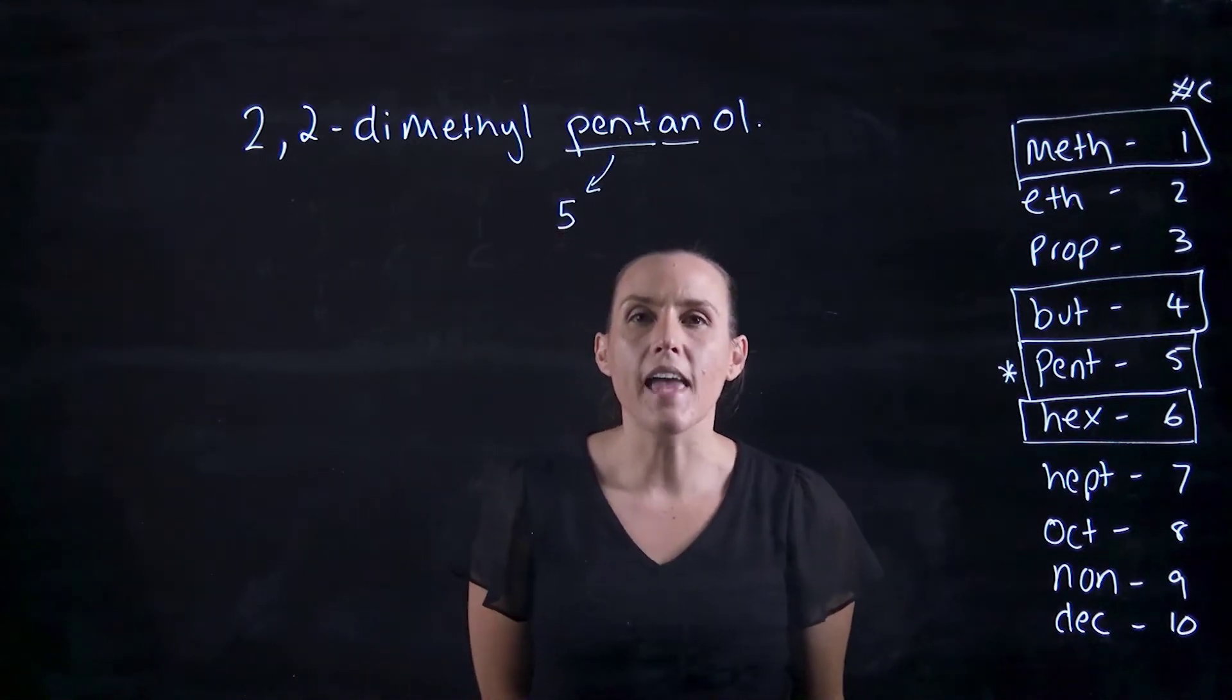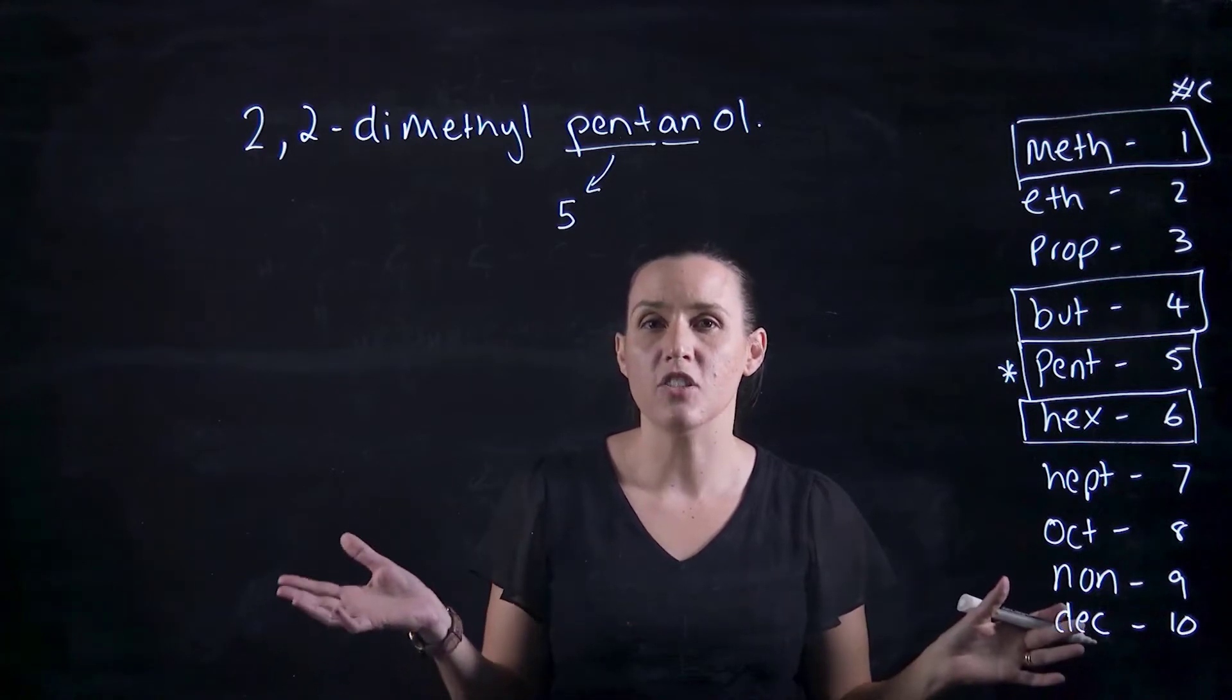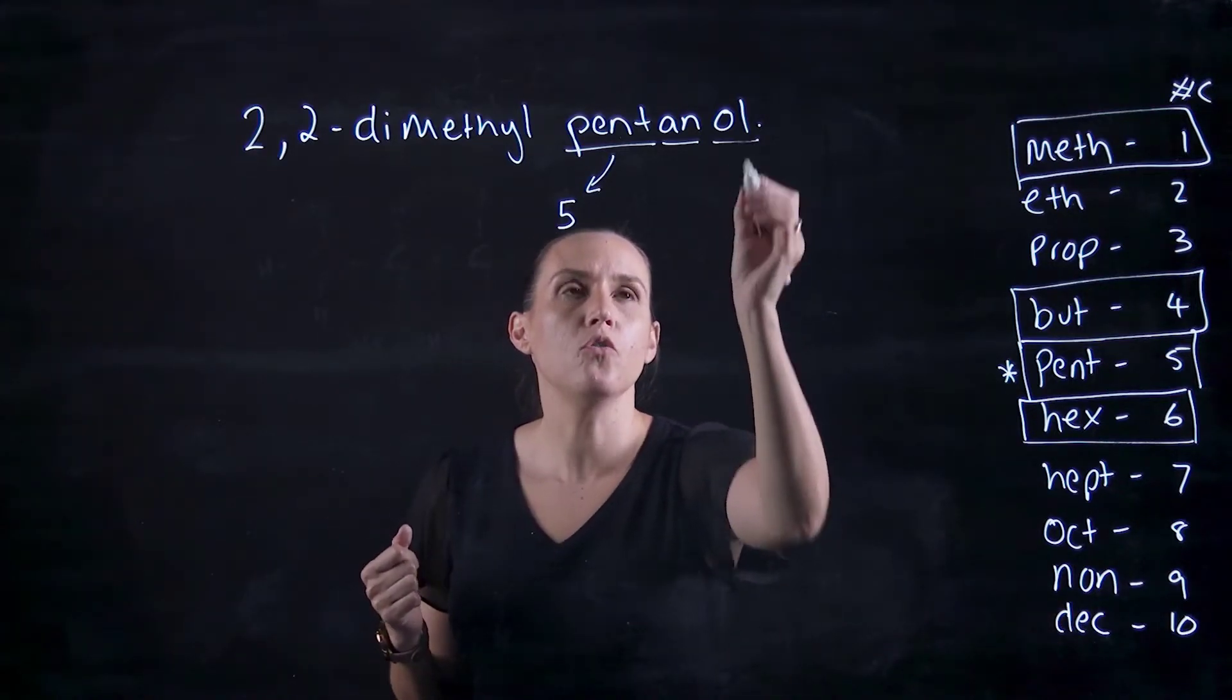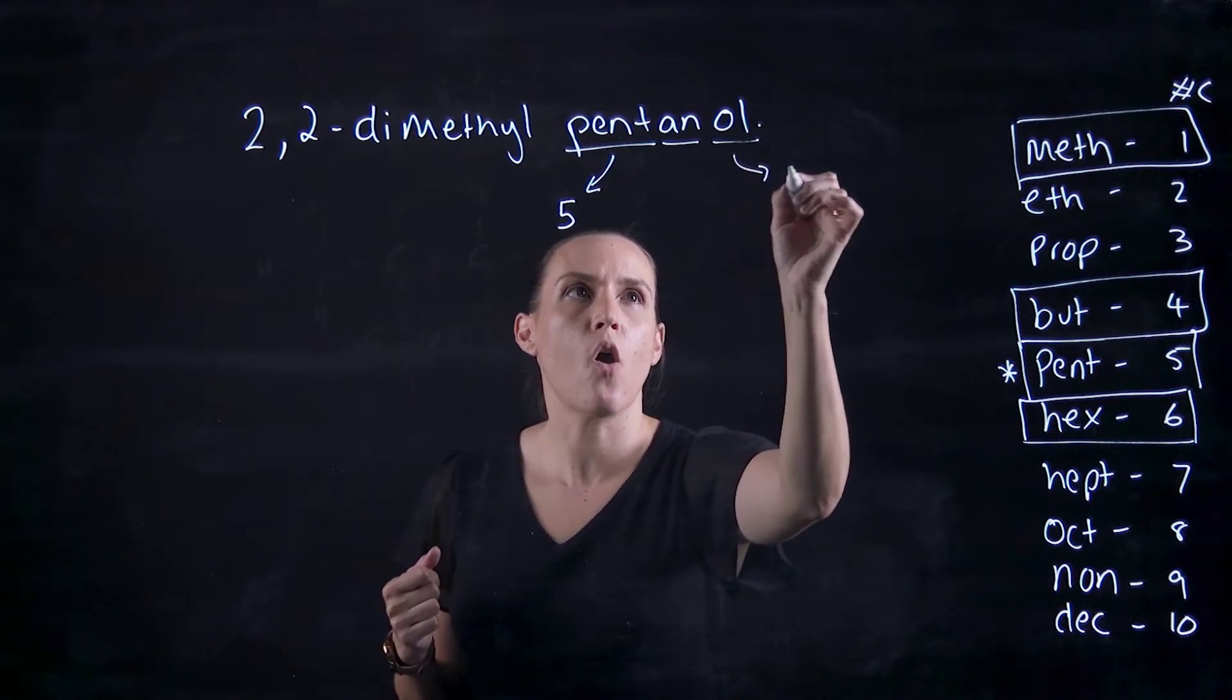An means that it's an alkane chain, so it's all single bonds. And ol means that there is an OH.